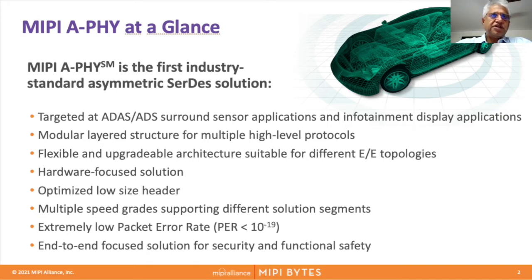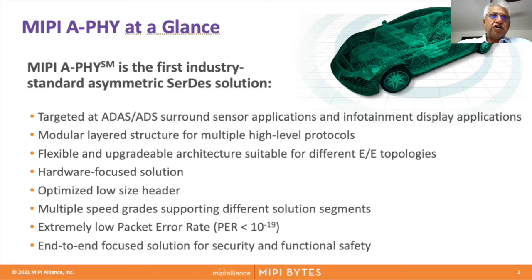This is a point-to-point and daisy-chain communication supporting physical layer. The structure is very modular — flexible and upgradable architecture targeted for end-to-end application topologies. It is hardware-focused, optimized for low-size headers for high throughput, supports multiple speed grades for different solutions, has an extremely low packet error rate of the order of 10 to the minus 19, and an end-to-end focus on security and functional safety requirements.